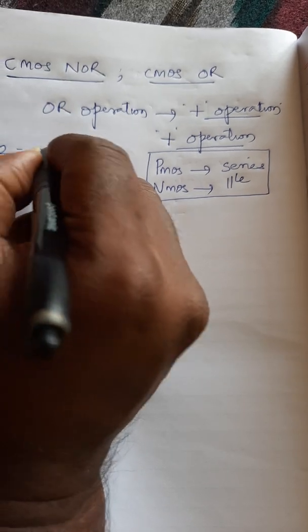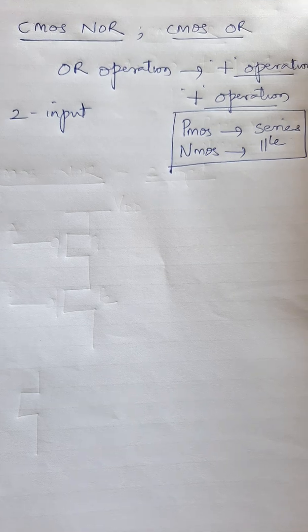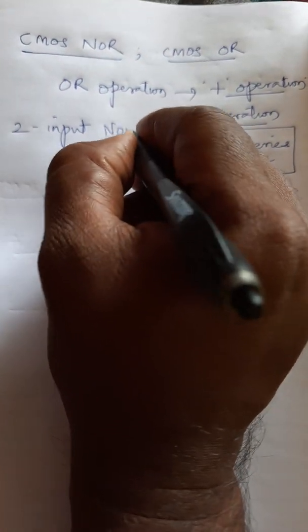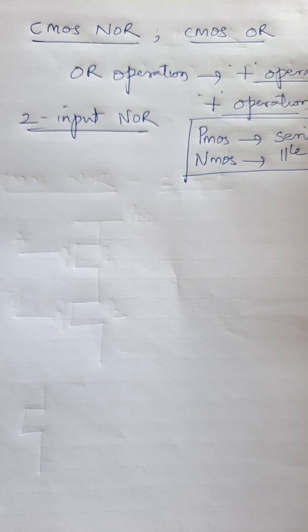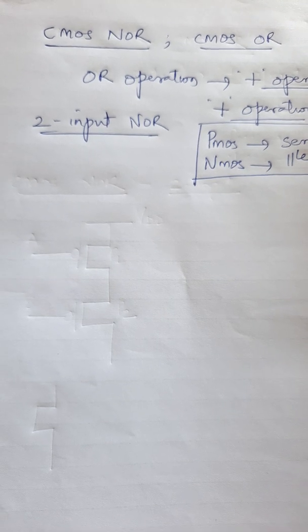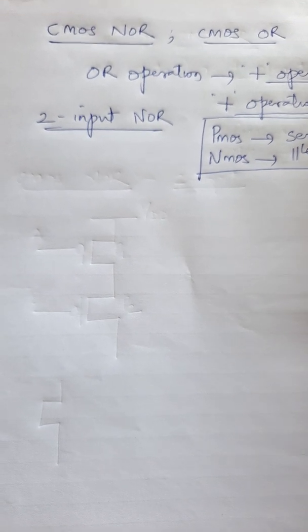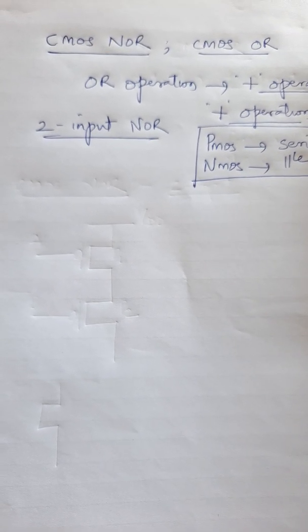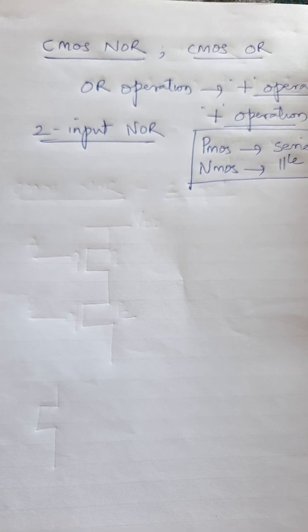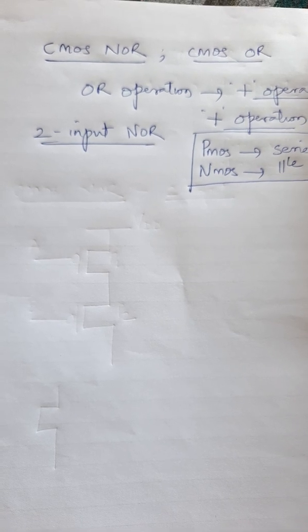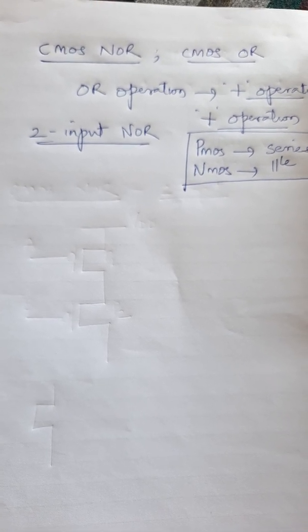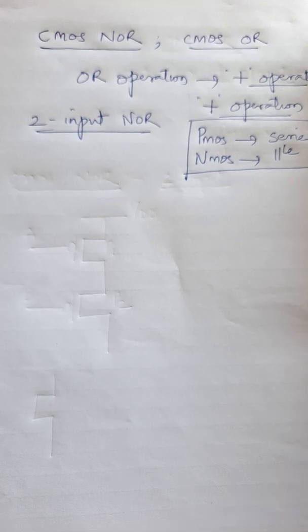Since we are trying to draw the two-input NOR gate, we need two PMOS and two NMOS — it depends upon the number of inputs. If you are drawing a three-input gate, it will be three PMOS and three NMOS. For a two-input gate, it will be two PMOS and two NMOS.